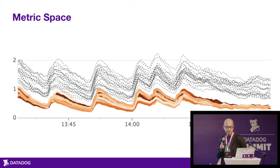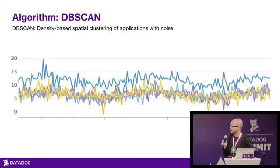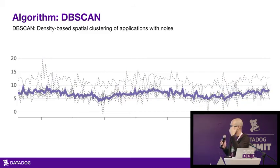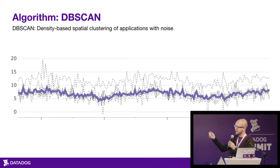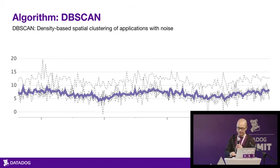We have two different algorithms for outlier detection. One is called DBSCAN, named after a clustering algorithm. You have a bunch of time series, and we calculate a new median time series — for each tick you calculate the median value. Then you calculate the distance between each series and the median series, and take the median of those distances. That's what we consider to be close, so anything within that distance to each other forms the main group, and anything farther away is an outlier.